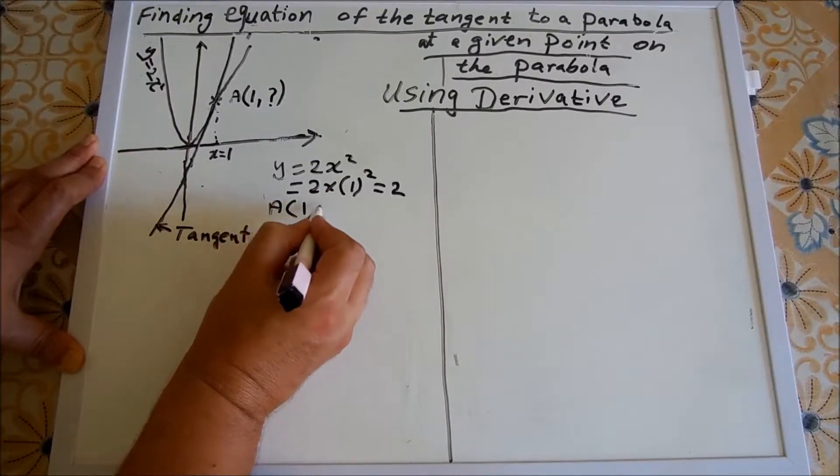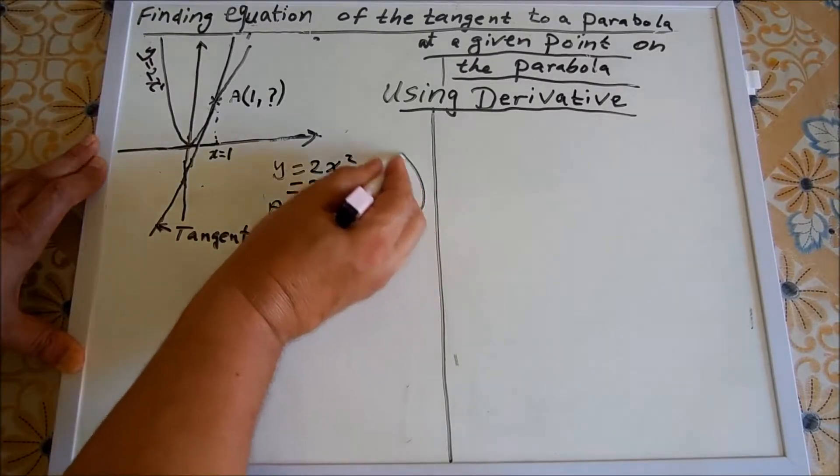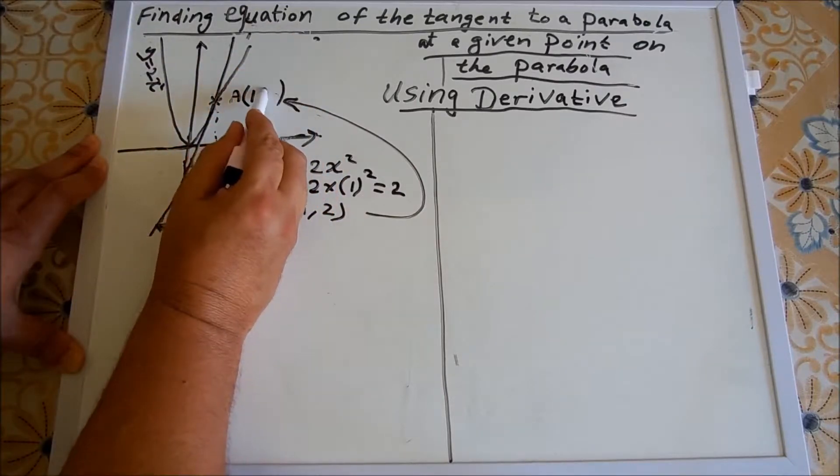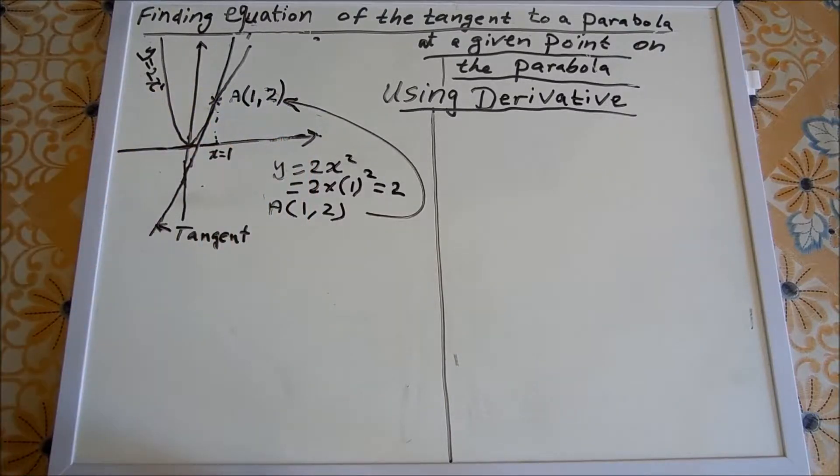So point A is (1, 2). We go back to the original question to find the equation of the tangent.